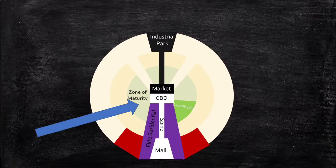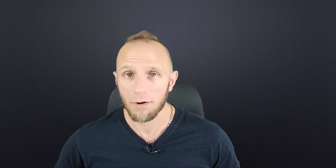The zone of maturity is the area where middle-class society dwells. This concentric zone may have previously been occupied by elites prior to them moving closer to the spine sector. Therefore, infrastructure is good in the zone of maturity, and the sector has access to the CBD and market area.